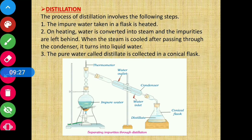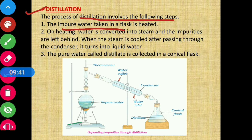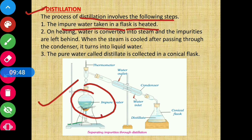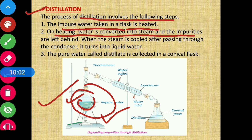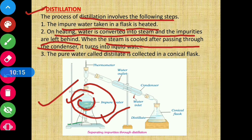Another method is distillation. In the distillation process, the impure water taken in a round-bottom flask is heated. On heating, water is converted into steam and the impurities are left behind in the flask. The steam then passes through a condenser.